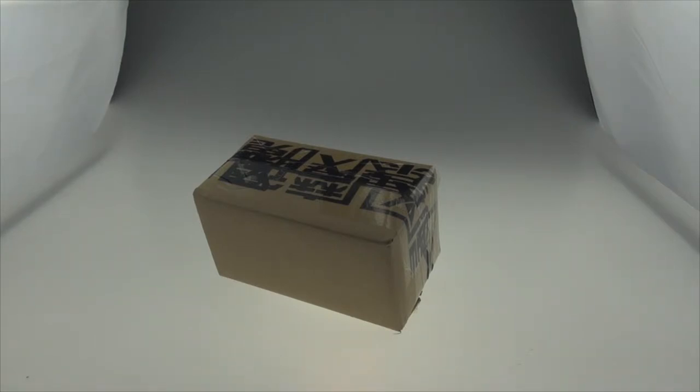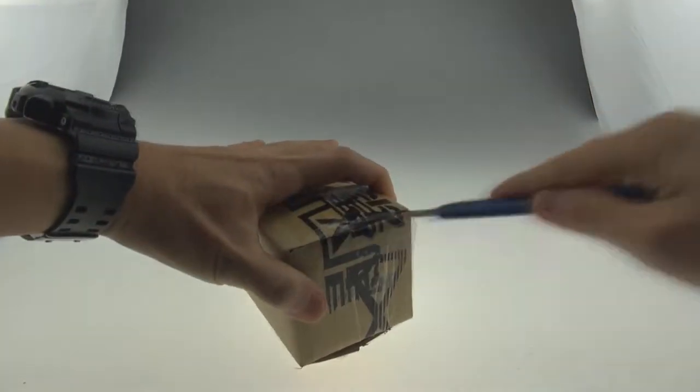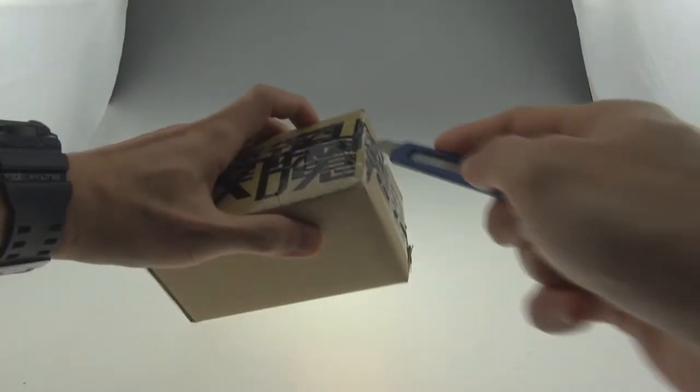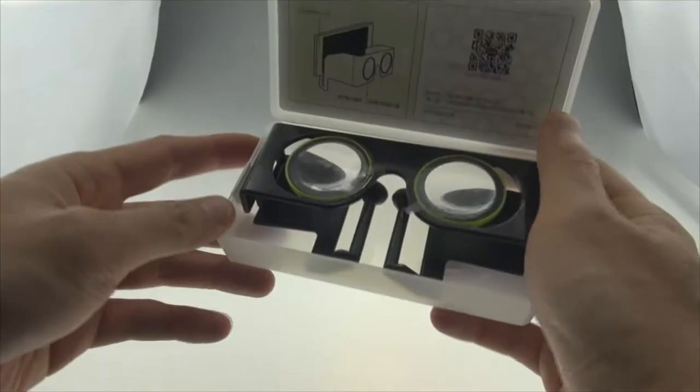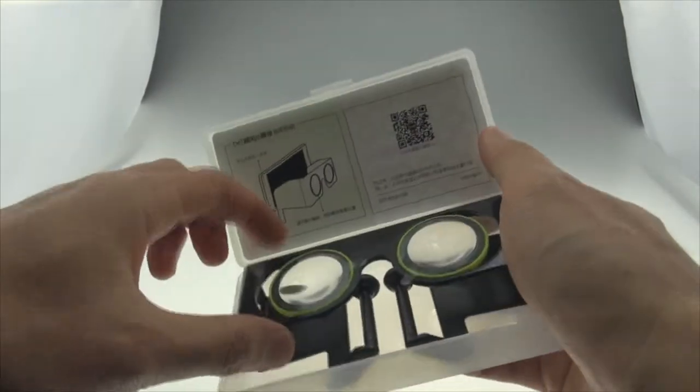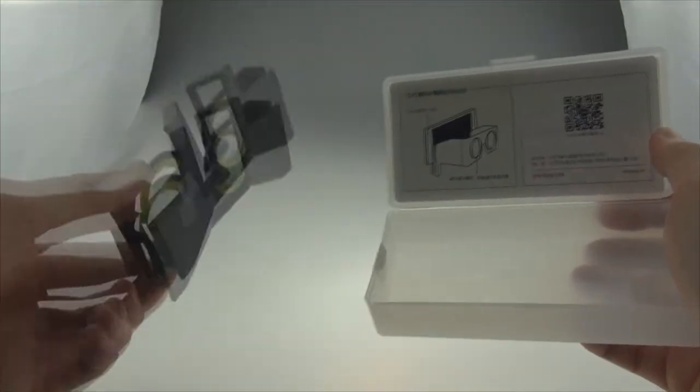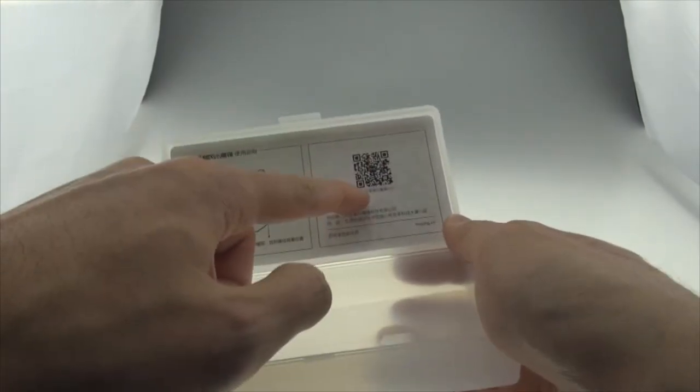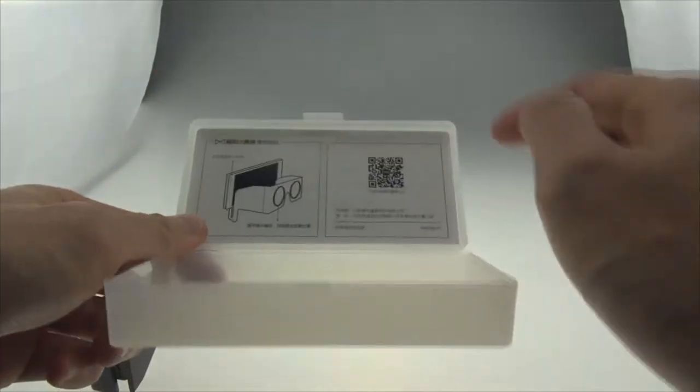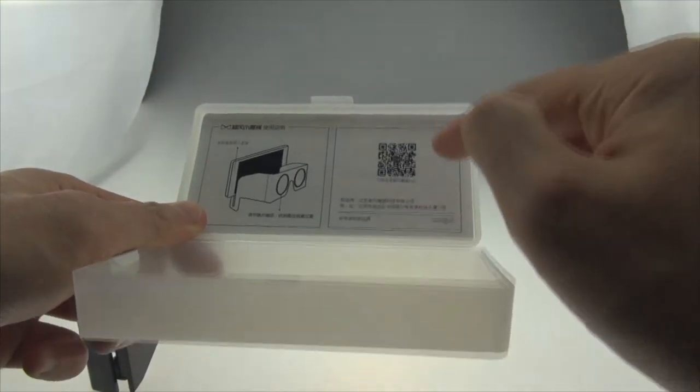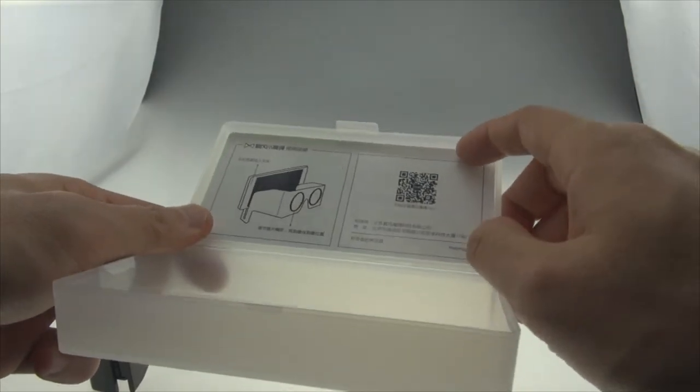So let's see what's inside first. In the box, there are two things and it's very simple. I have the glass and the instruction, and with this QR code, you can download the mobile app that provides some 3D content.